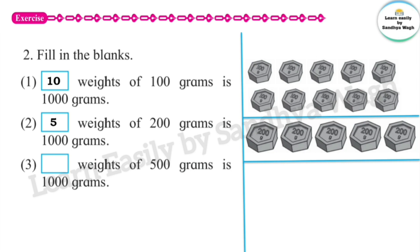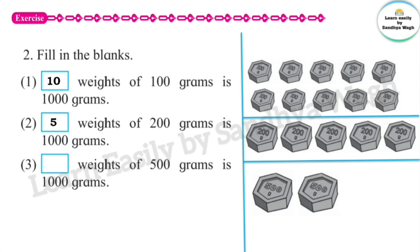Dash weights of 500 grams is 1000 grams. 500 grams plus 500 grams — so 2 weights of 500 grams make 1000 grams.